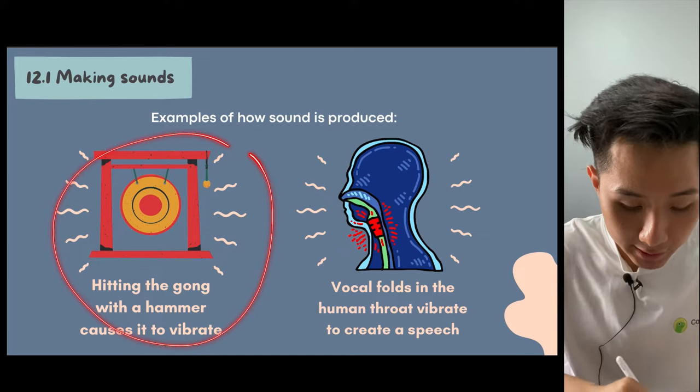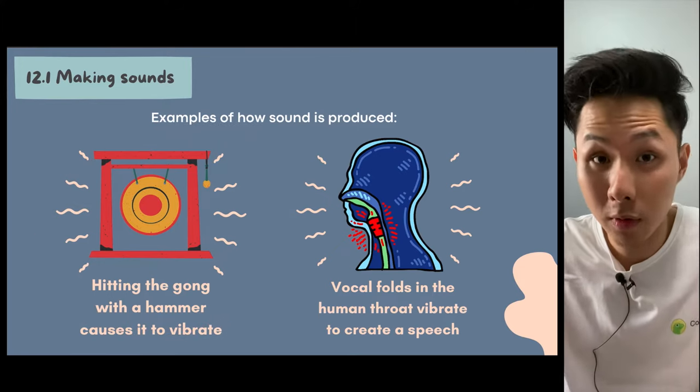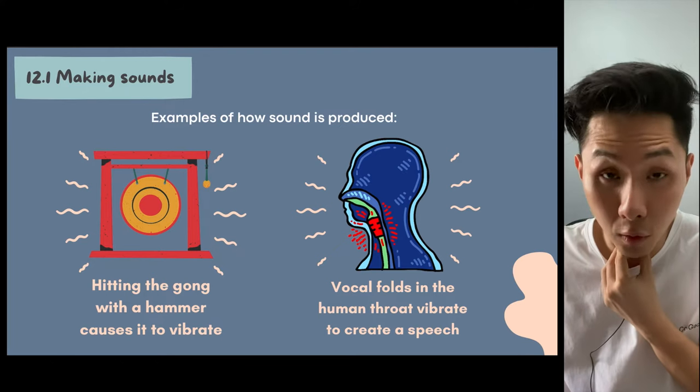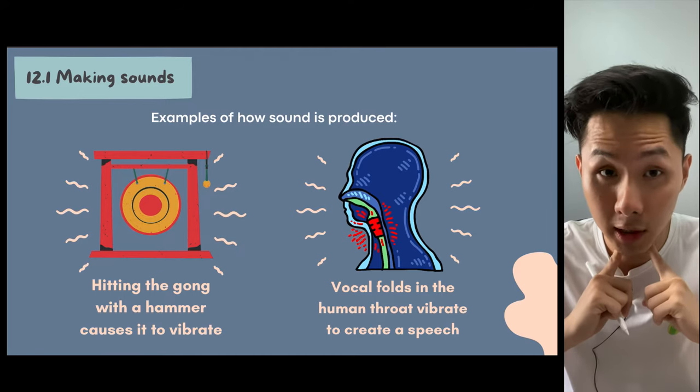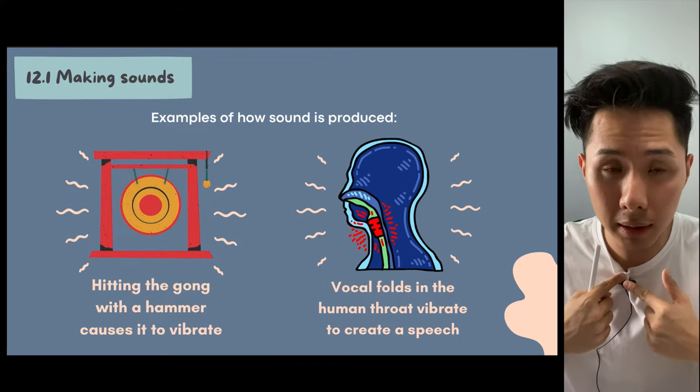These are the examples of how sound is produced. When you hit a gong here, the gong will vibrate and that's what causes the sound. Similarly, your vocal fold, I can actually feel the vocal fold of myself vibrating. That's also how sound is created and then goes into the microphone here.